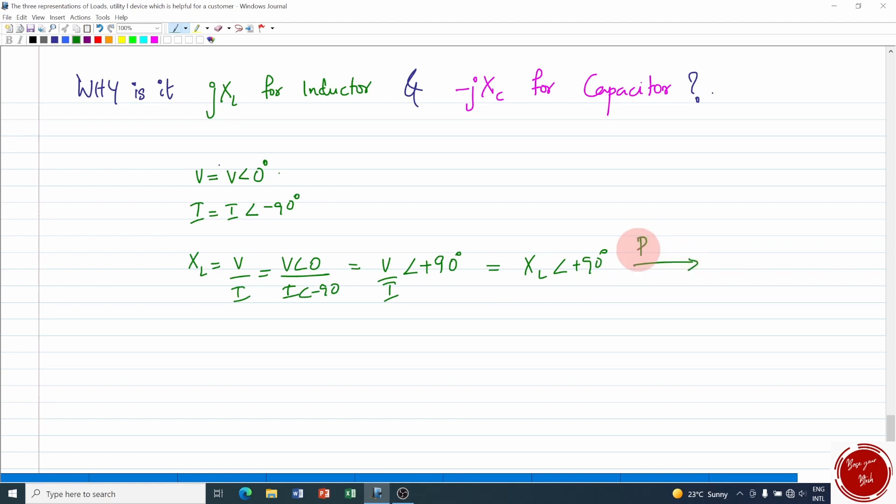Now converting into the rectangular form: √(a² + b²) = XL and tan⁻¹(b/a) = 90° or b/a = tan(90°) which is infinity, or a = 0.